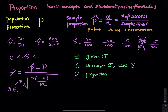In a proportion problem, they will use the word proportion or give you a sample size and a number of successes. There is no mention of standard deviation, mean, or variance — no mean, no variance, no standard deviation. Proportion problems are always the easiest: the problem statement is short and simple. You just need to pick up the sample size and the number of successes from the problem.